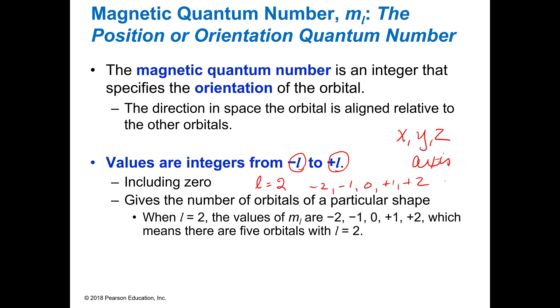So if your L number is 1, if L was 1, it would be minus 1, 0, plus 1. And it could be those. It doesn't have to be all of them, but it could be those.